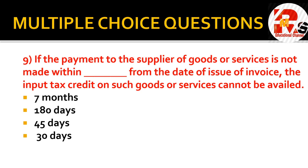Next question: if the payment to the supplier of goods or services is not made within blank days from the date of the invoice, the input tax credit on such goods or services cannot be availed. Remember — in months it is 6 months, and in days it is 180 days. So 180 days is the right answer for this ITC question.